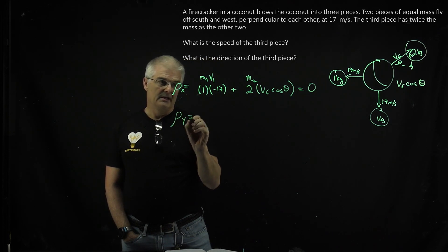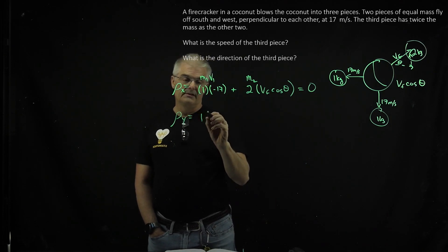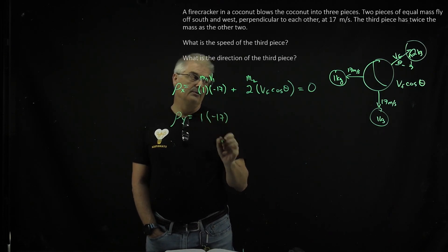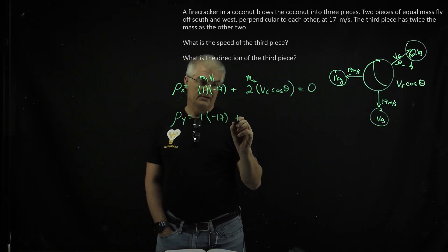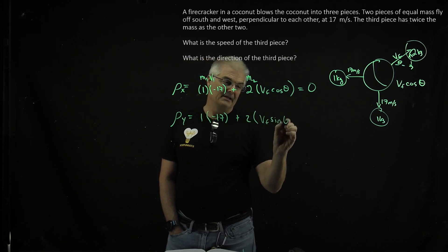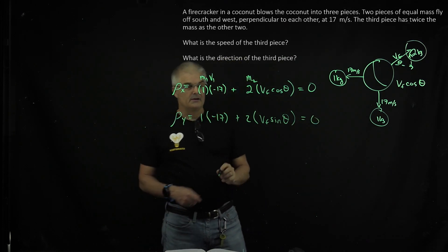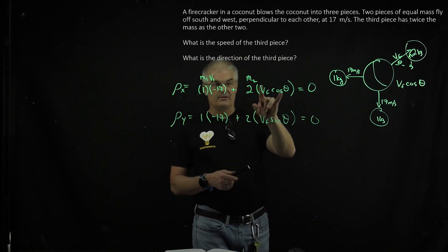I can say py equals one also times negative 17, because it's going down negative direction, plus two times vf sine theta, and that's going to equal zero. Well, if you do the math, since these equations are the same...